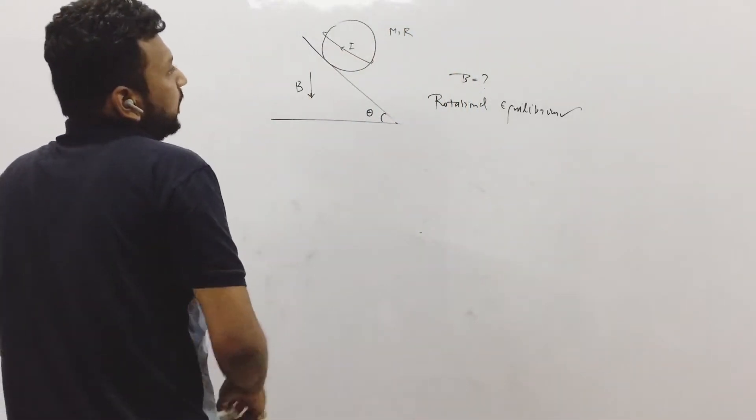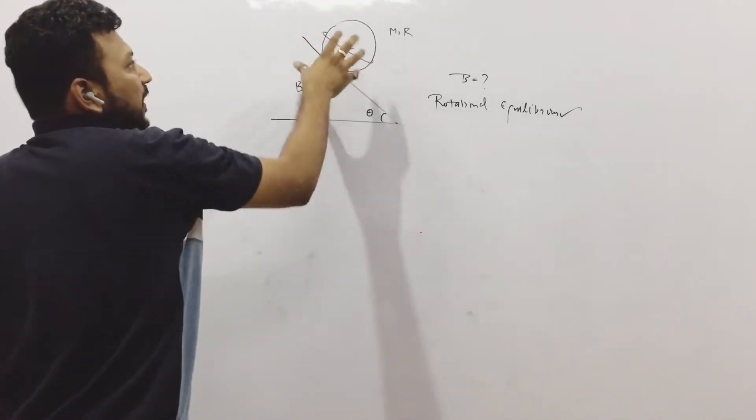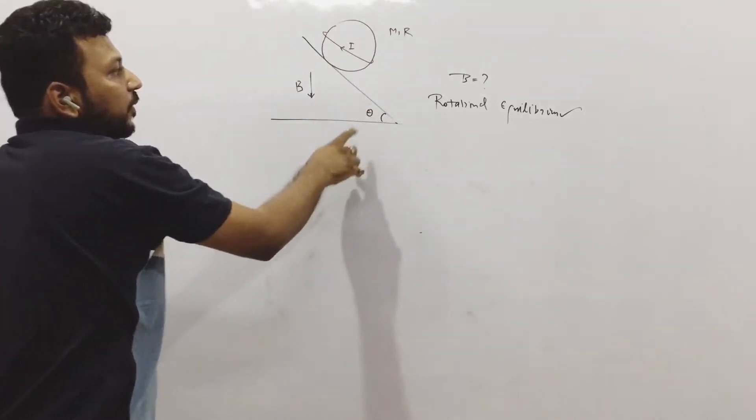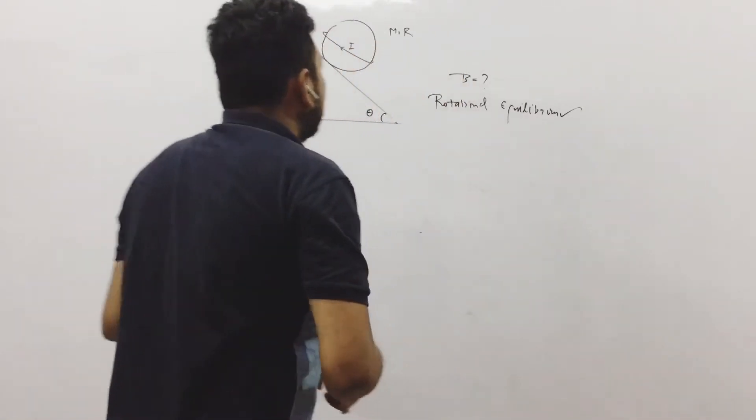So the question goes like this, there is a sphere and there is a wire over it in which a current I is going, its mass is M, its radius is R, there is magnetic field B downwards, angle is theta. It is in rotational equilibrium, we need to find what is B.